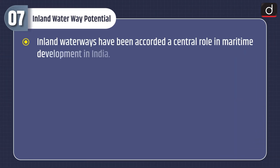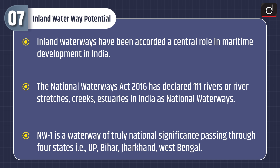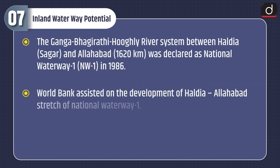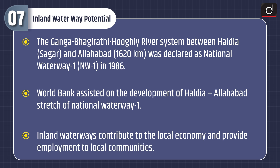Inland waterways have been accorded a central role in maritime development in India. The National Waterways Act 2016 has declared 111 rivers or river stretches, creeks, and estuaries in India as national waterways. NW1 is a waterway of truly national significance, passing through four states — UP, Bihar, Jharkhand, and West Bengal. The Ganga-Bhagirathi-Hooghly river system between Haldia Sagar and Allahabad, spanning 1,620 km, was declared as National Waterway 1 in 1986. The World Bank assisted in the development of the Haldia–Allahabad stretch of National Waterway 1.